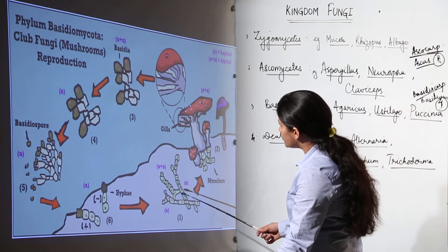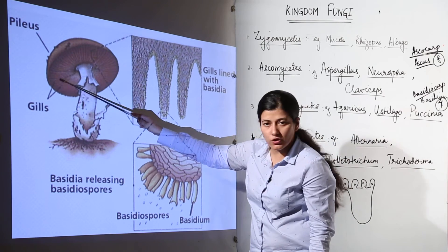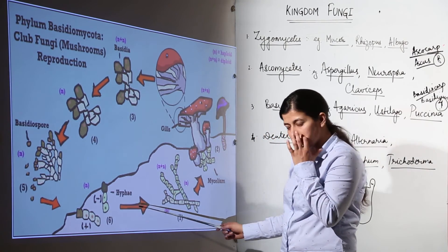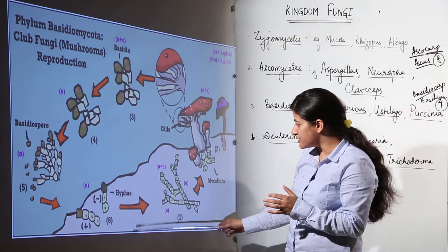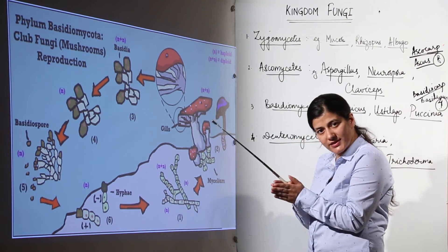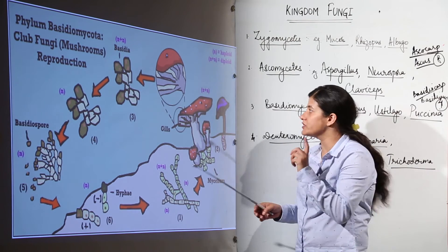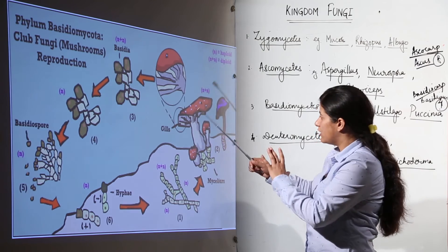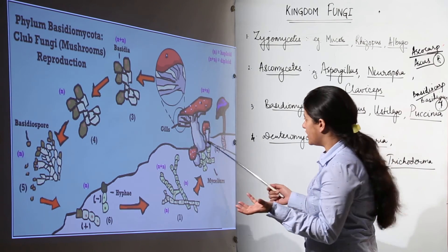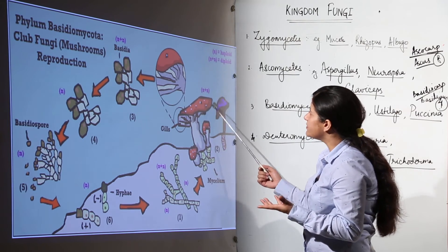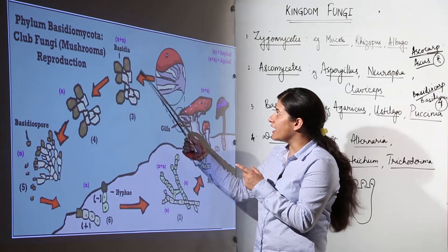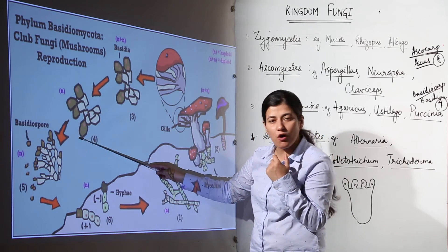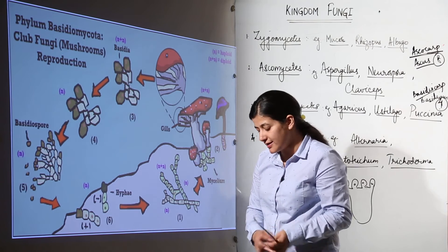On the gills you find the basidiospores. The fungal hyphae start as plus and minus; they come close, form the dikaryon stage where plasmogamy has taken place but karyogamy has not. This dikaryotic condition develops into a full, good-looking mushroom. When that dikaryon forms basidia, karyogamy occurs, then meiosis takes place and basidiospores are formed, which germinate to give rise to mycelium again.